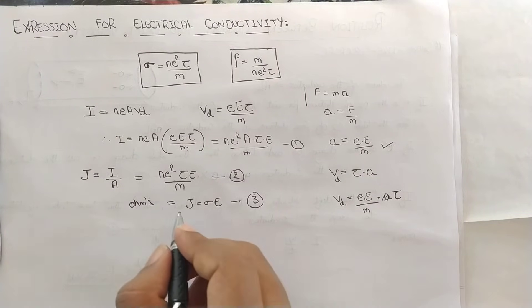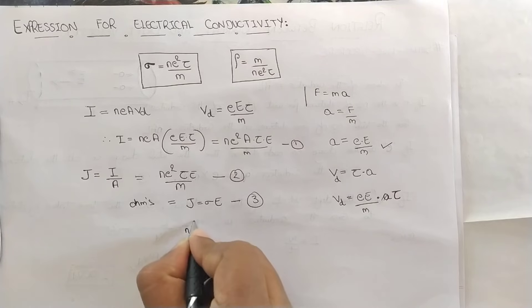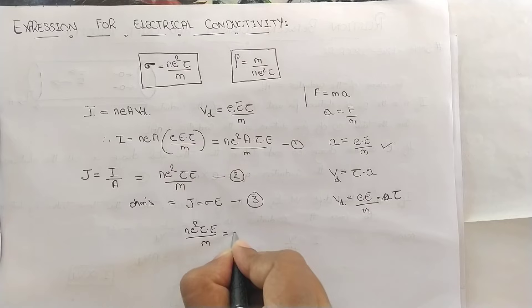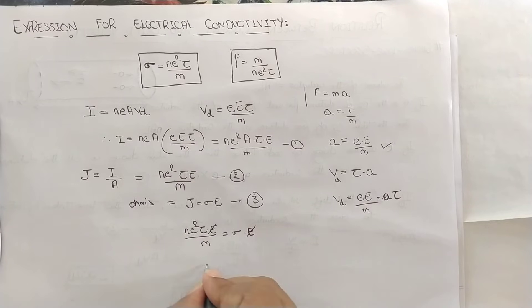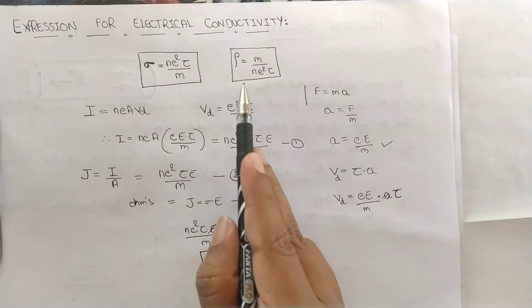Now from this equation, substitute J value that is nothing but N E square tau into E divided by M equals electrical conductivity into E. E and E cancels each other and you are left with the expression of electrical conductivity that is N into E square into average time tau over M.